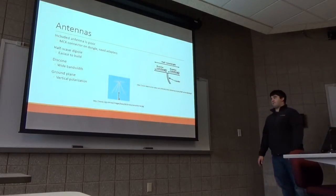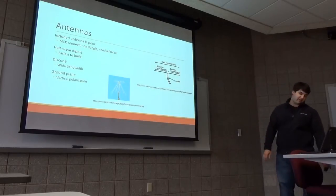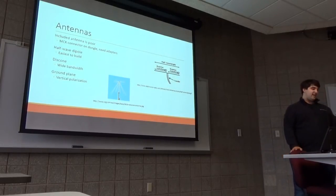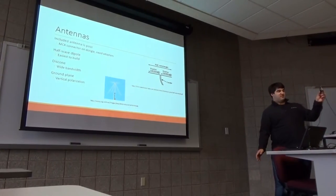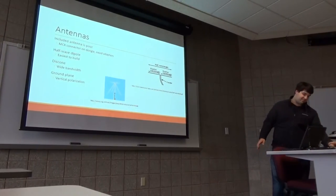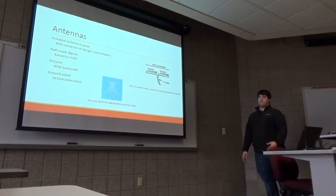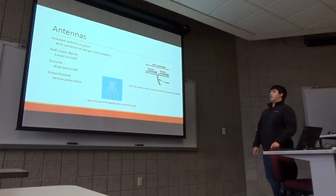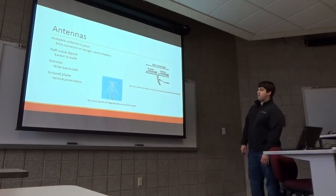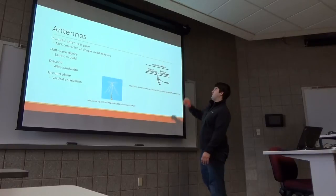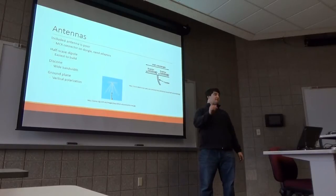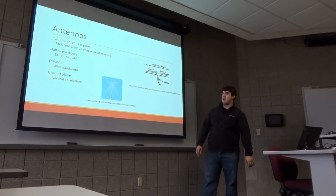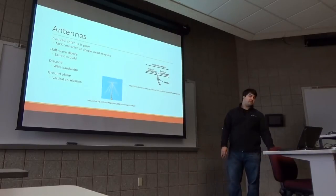Antennas are a huge topic, so I'll cover some basic things. The connector on them is a little MCX connector, and in professional radio it's not commonly used, so you're going to need to get adapters — I've got a whole little adapter piece on there to fit whatever antenna connector you end up using. The simplest antenna you can make is a half-wave dipole — very easy to build. You calculate the wavelength, put a piece of wire that's a quarter of a wavelength to the center conductor and a quarter of a wavelength to the shield, and hang it up. That's your most basic antenna and it works pretty well.